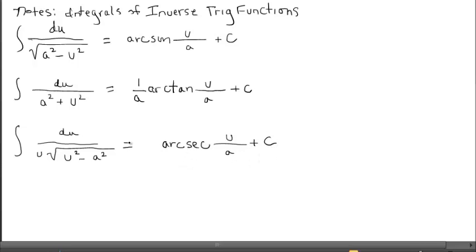So here the antiderivative is going to be arc secant of u over a plus c. Two minor adjustments: we need absolute value around the u, and it also has a constant multiplier 1 over a in front of arc secant. The only one of the three that doesn't have that constant multiplier is arc sine.